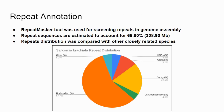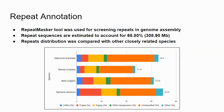We then moved to repeat annotation, for which we used the RepeatMasker tool. We found that around 65% of the genome is covered with repeat sequences. We compared the repeat distribution with closely related species, and the distribution is also similar.